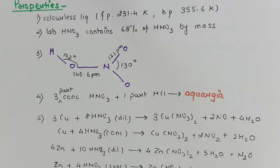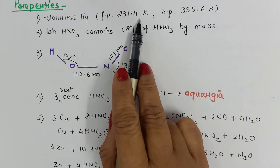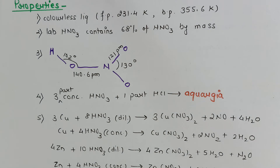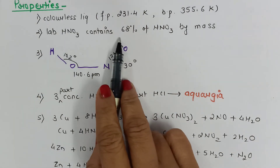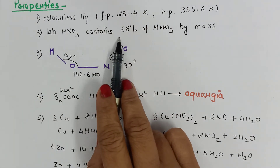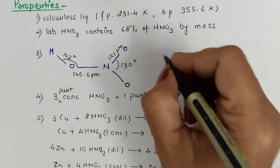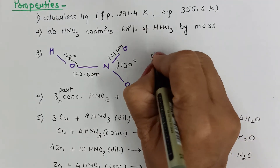Nitric acid is a colorless liquid with a freezing point of 231.4 K and a boiling point of 355.6 K. Laboratory nitric acid contains about 60% HNO3 by mass. If we consider the structure of nitric acid, it is a planar structure.